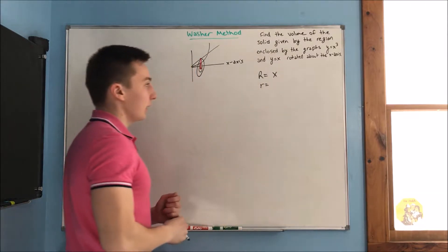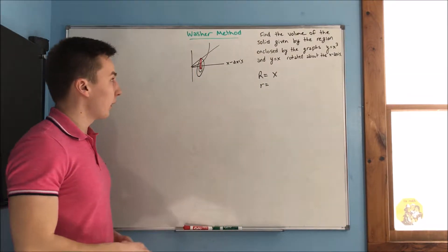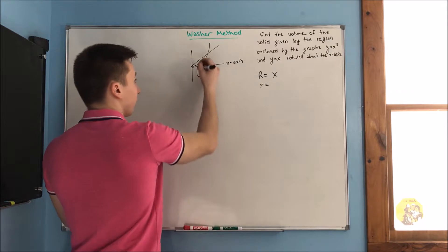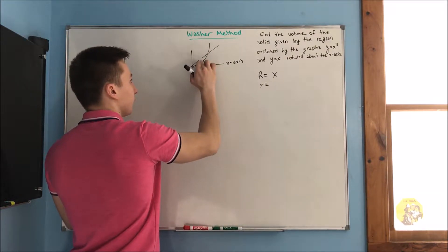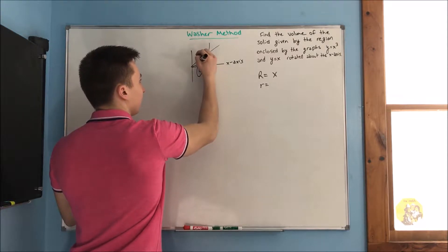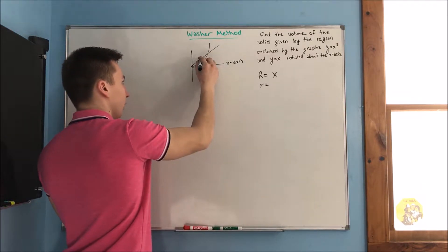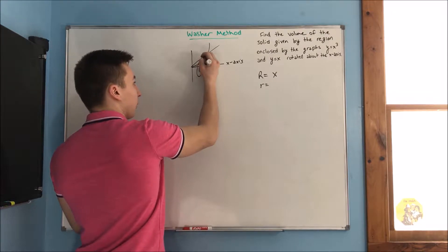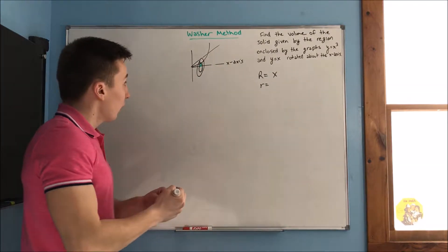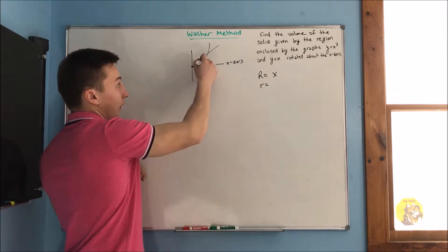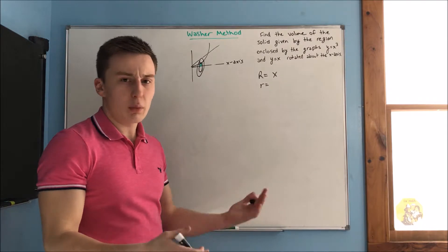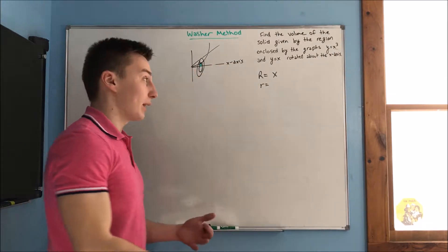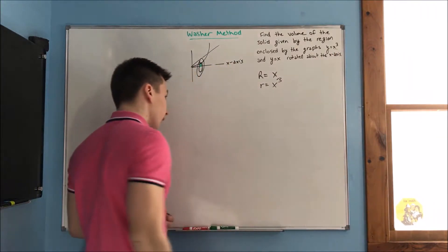Now what about our lower radius? Our smaller radius is going to be from the lower curve to the center. That is going to be whatever y is — just like it was in the last problem, it is still our y. But what is our y? Well in this case our y is x cubed, so we plug in x cubed and that is our little r.